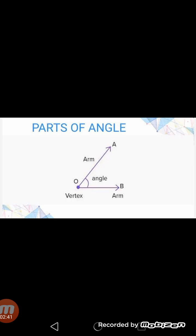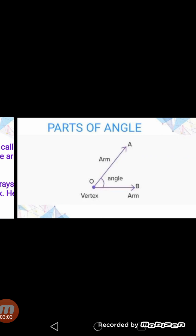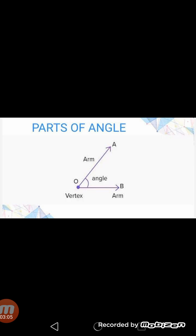In the image you can see the diagram of an angle where OA and OB are called arms of the angle. Number two — Vertex. The common endpoint at which the two rays meet to form an angle is called the vertex. Here, point O is the vertex of angle AOB. In this diagram, point O is the common point of intersection, so we call this point the vertex.